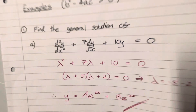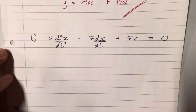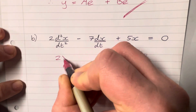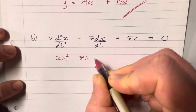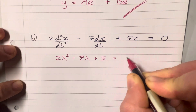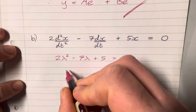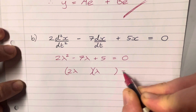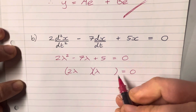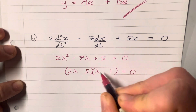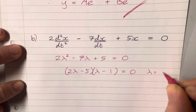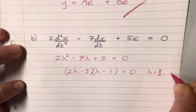Let's do that again — find the general solution to this differential equation. Again we can jump straight from the differential equation to the auxiliary equation and solve it. There's a 5 and a 1; the 1 goes there, 5 goes there, both need to be negative. There we go, factorized.